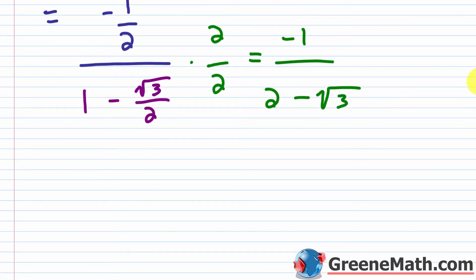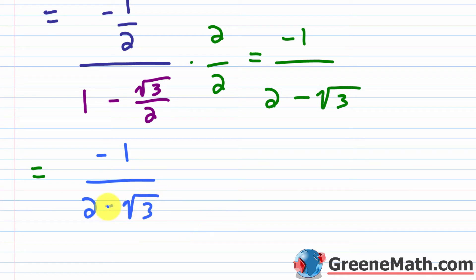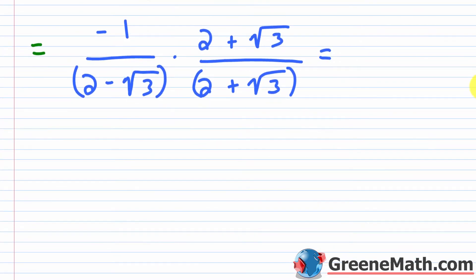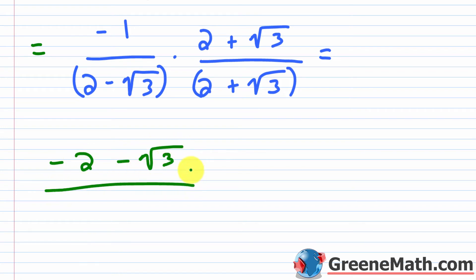We don't want a radical in the denominator, so we rationalize. We have negative 1 over 2 minus square root of 3. We multiply by the conjugate: 2 plus square root of 3 over 2 plus square root of 3. In the numerator we get negative 2 minus square root of 3. In the denominator, first squared minus last squared: 2 squared is 4, minus square root of 3 squared which is 3, giving 4 minus 3 equals 1. So the answer is negative 2 minus the square root of 3.